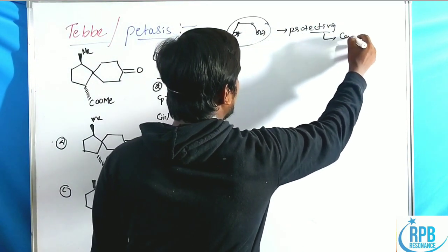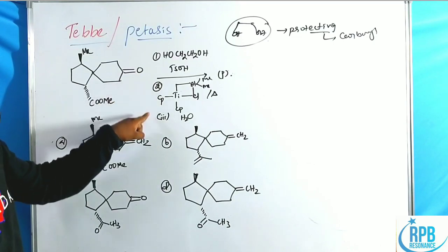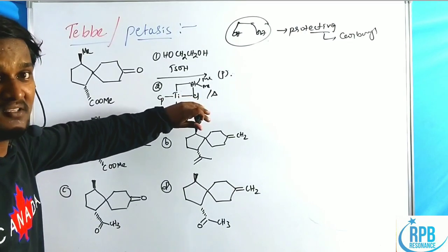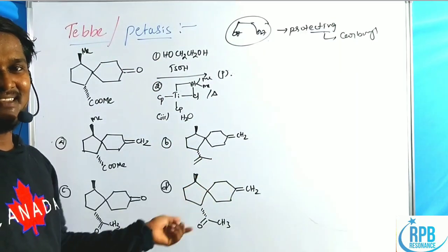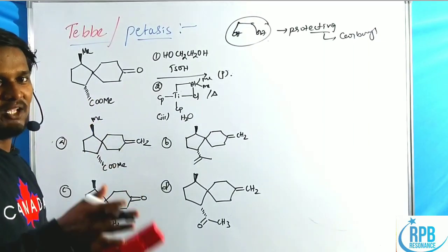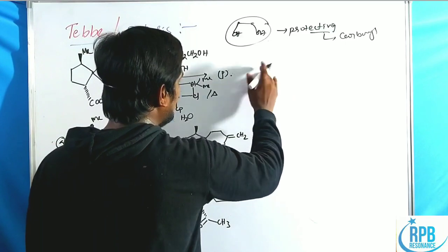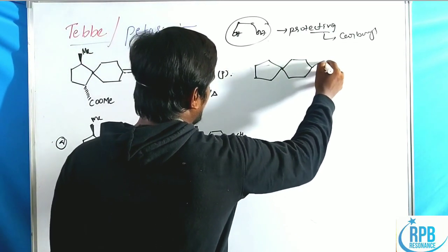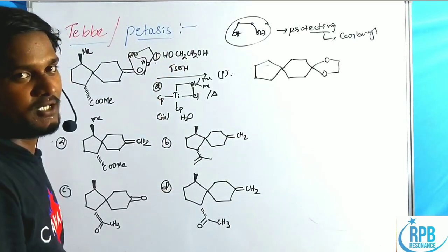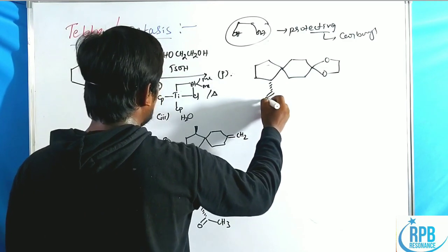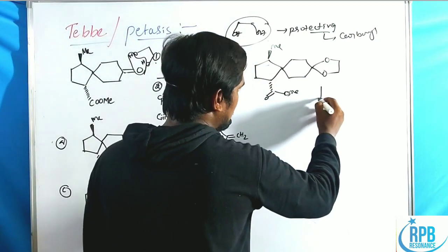The glycol acts as a protecting group for the aldehyde or ketone carbonyl. Once the carbonyl is protected, the Tebbe reagent is applied in step two. If one mistakenly assumes the Tebbe reagent methylenates the protected carbonyl, they would get the wrong answer. The correct approach is to proceed step by step.